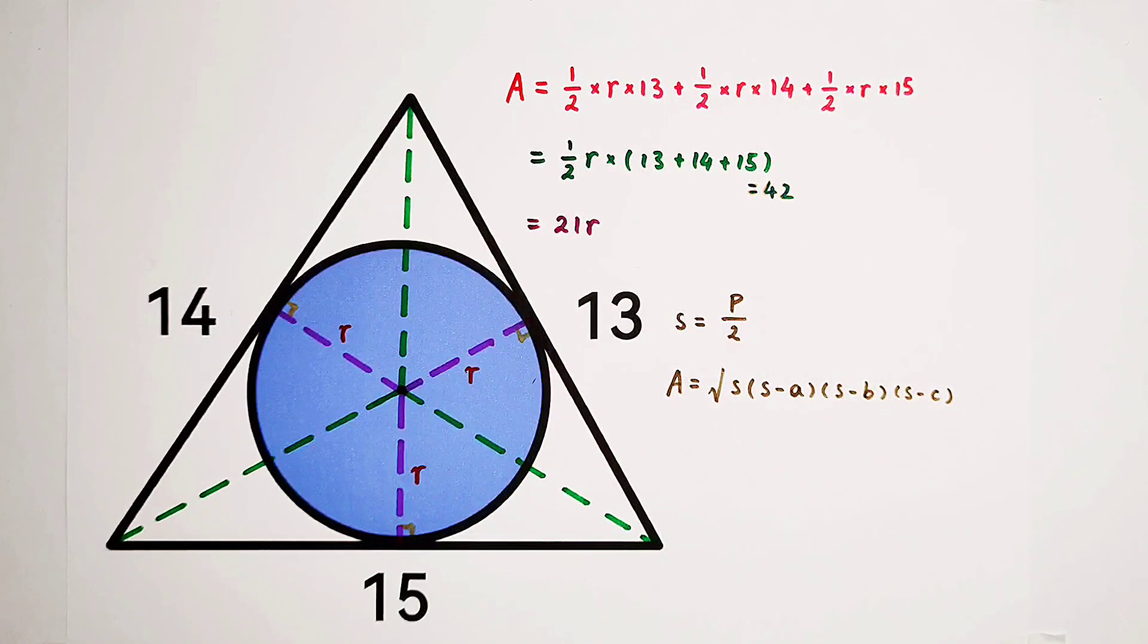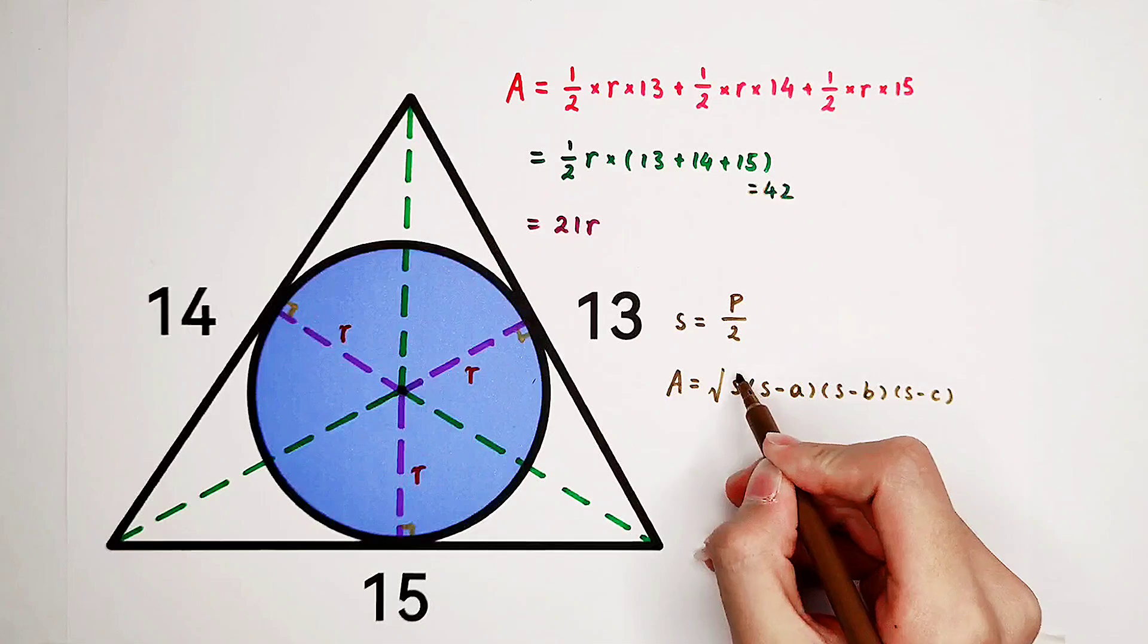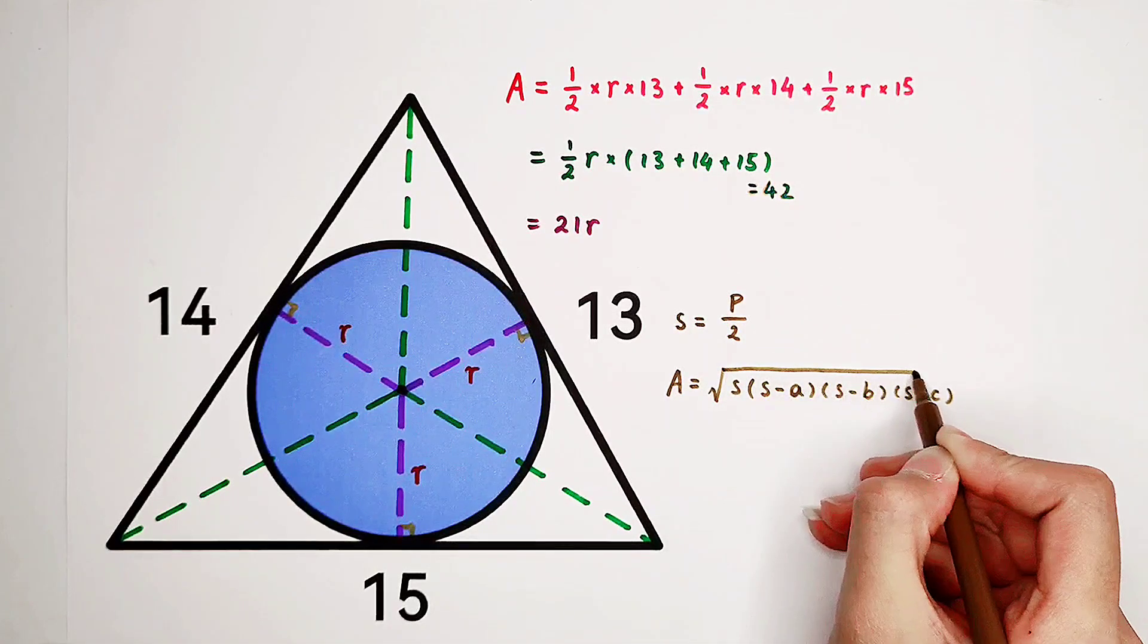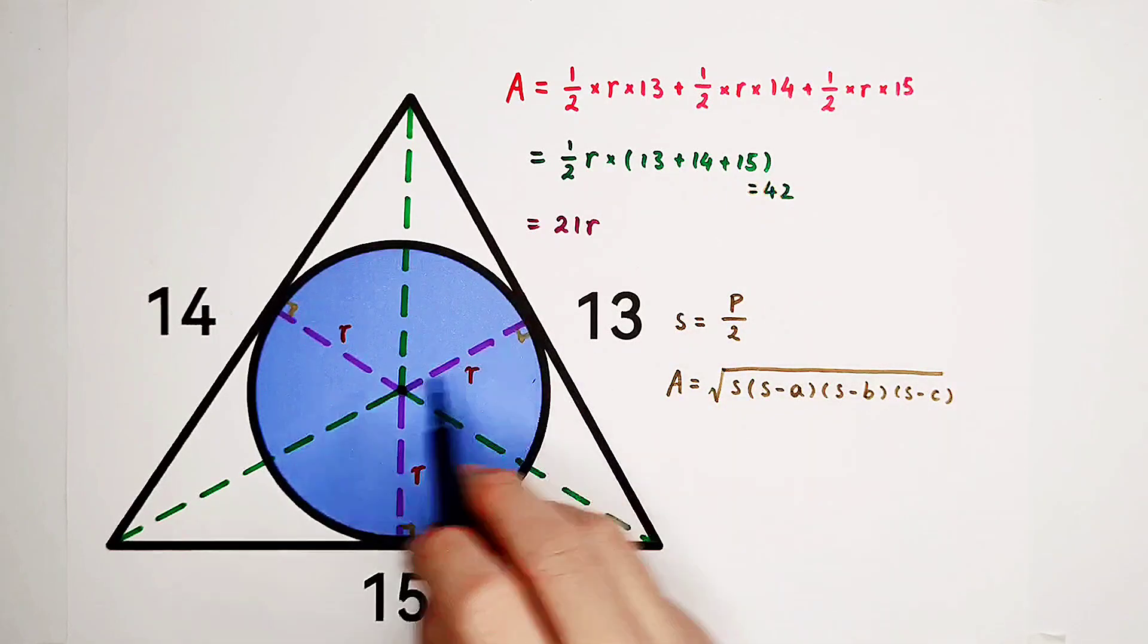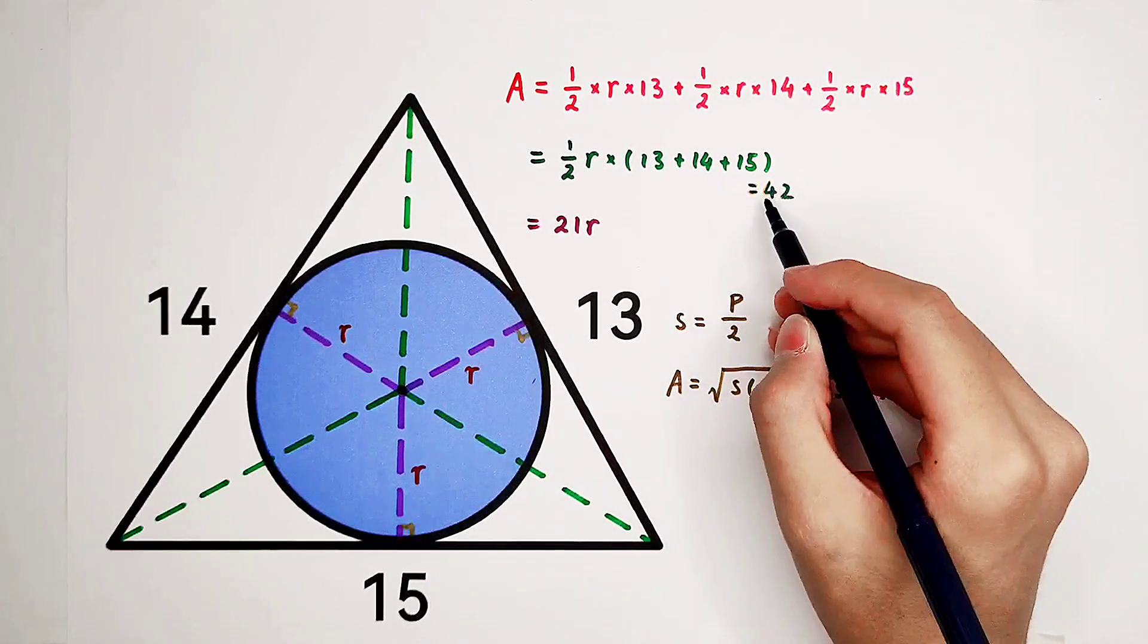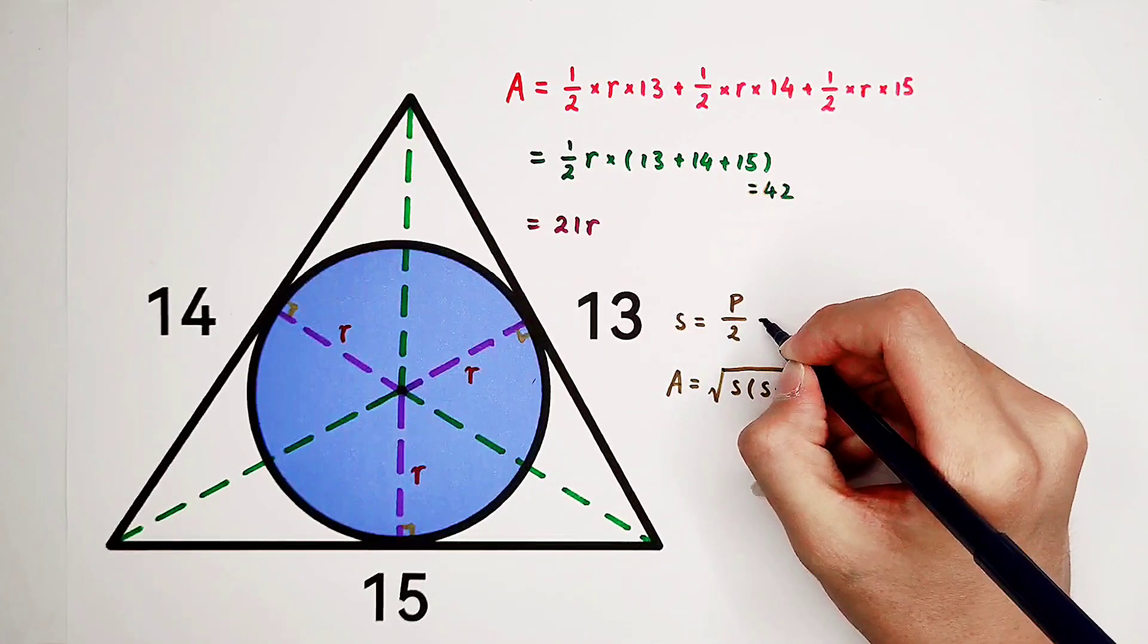That means in this situation, this problem, A is 13, B is 14, C is 15. P is, of course, 13 plus 14 plus 15 is 42. We've already calculated it. So S is 21.